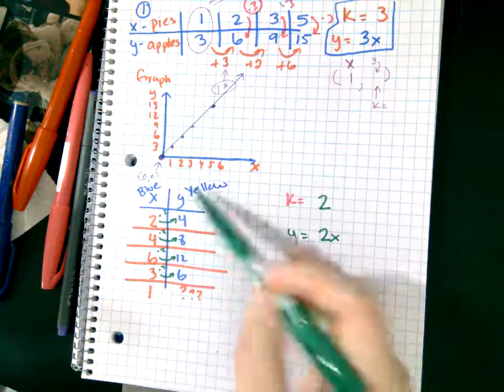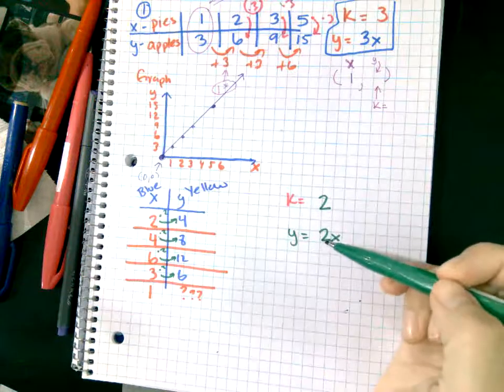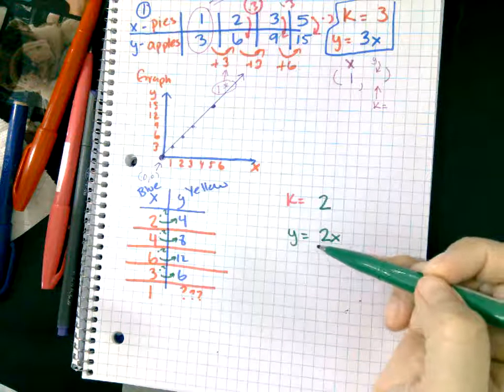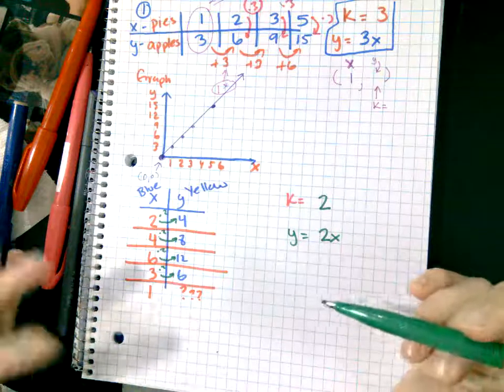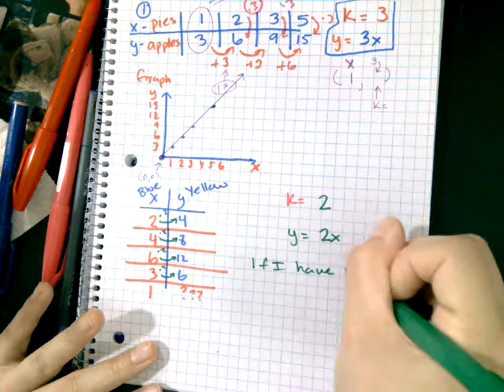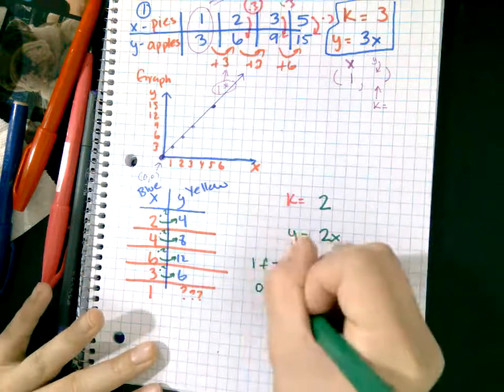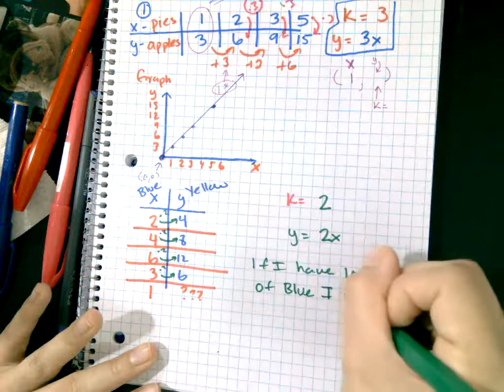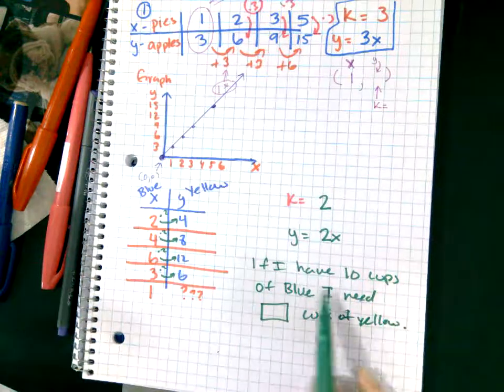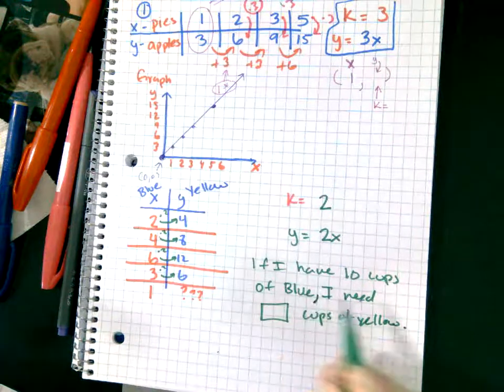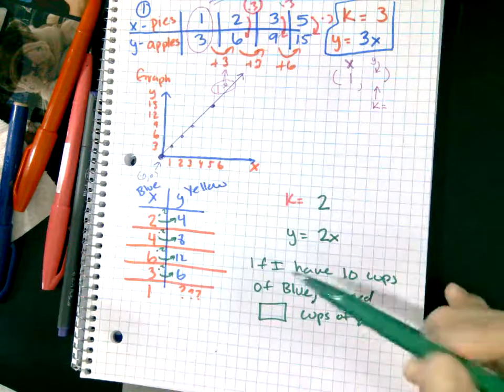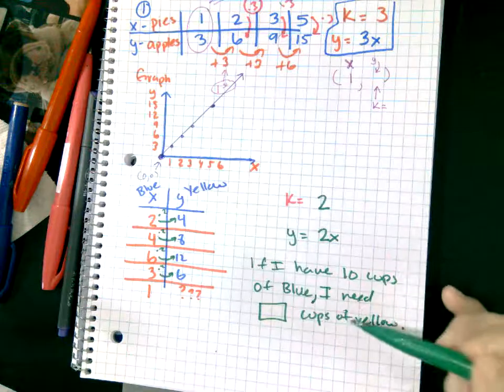When you're given a table, you have to determine the unit rate and the equation. They might ask you, if I have 10 cups of blue, I need blank cups of yellow. How many cups do I need if I have 10 cups of blue?